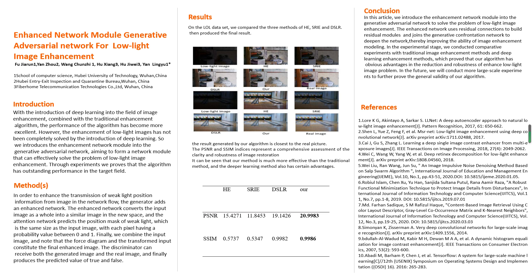With the introduction of deep learning into the field of image enhancement, combined with traditional enhancement algorithms, the performance of algorithms has become more excellent. However, the enhancement of low-light images has not been completely solved by deep learning. So we introduced the enhancement network module into the generative adversarial network, aiming to form a network module that can effectively solve the problem of low-light image enhancement. Through experiments we proved that the algorithm has outstanding performance in the target field.